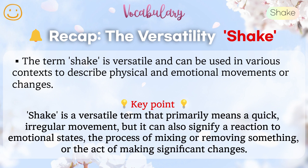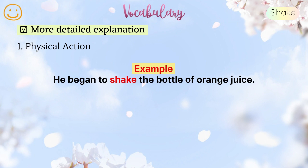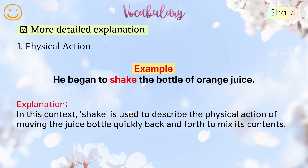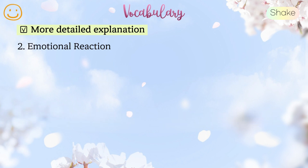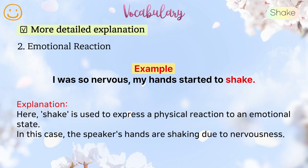Recap the versatility of shake: while shake primarily refers to a quick or regular movement, it can also be used in a variety of contexts to describe actions that agitate, surprise, or disturb. More detailed explanation: 1. Physical action — example: He began to shake the bottle of orange juice. Here, shake is used to describe the physical action of moving the juice bottle quickly back and forth to mix its contents. 2. Emotional reaction — example: I was so nervous, my hands started to shake. Here, shake is used to express a physical reaction to an emotional state; the speaker's hands are shaking due to nervousness.